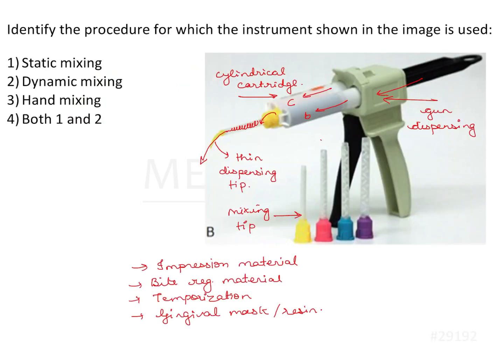Here in the image we have something that can be pressed through the hand. You press this gun and the material extrudes out. Identify the procedure for which the instrument is used - static mixing, dynamic mixing, hand mixing, or both one and two. The correct answer is static mixing, option one.